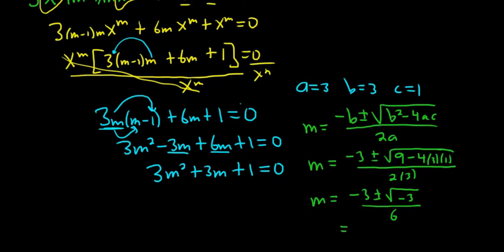So if you break this up, we get negative 3 over 6 plus or minus the square root of negative 3 over 6. So that's negative 1 over 2 plus or minus i square root of 3 over 6. So we have complex conjugate roots of the form alpha plus or minus beta i.